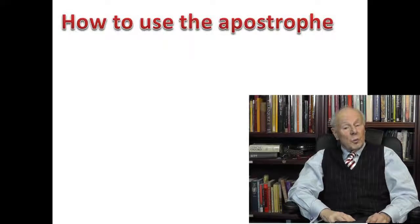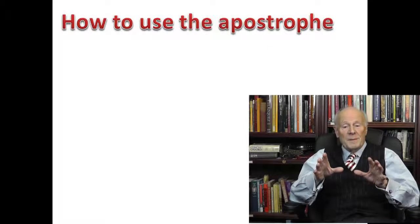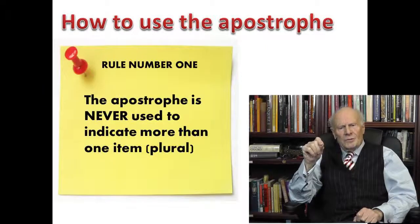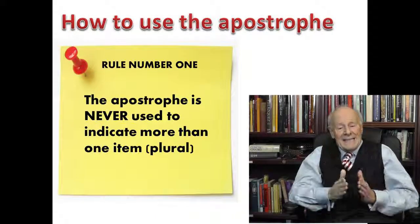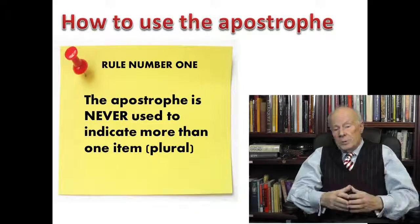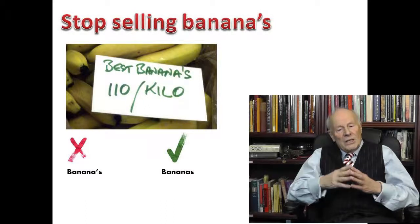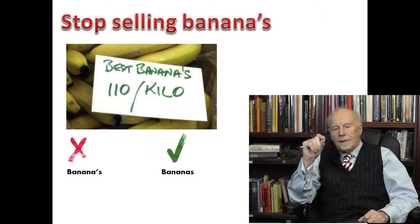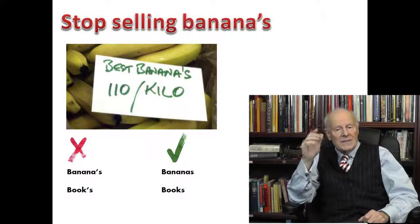Rule number one: get this right and you'll slash your apostrophe blunders by a staggering sixty percent. The apostrophe is never, ever used to indicate more than one item — in other words, making something plural. For example, the plural of banana should not have an apostrophe. The library doesn't have lots of 'book apostrophe s' — it's got lots of books.